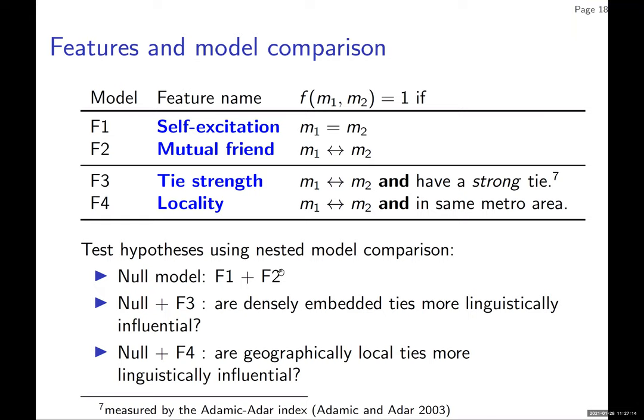Another question: the Adamic-Adar index is for undirected networks — is this looking at mutual links only, or a directed network? In this case, we are looking only at the undirected network. We constructed the network so that you need to have a mention and a reciprocal mention — only then does a tie exist. So we're applying this to mutual reciprocal links only.